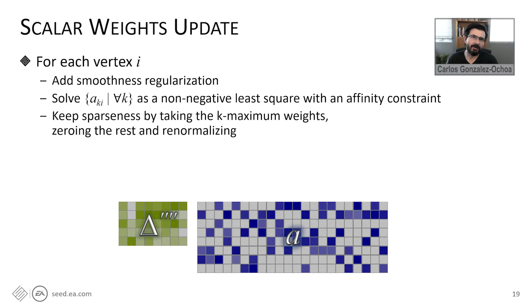Now we can see how the iterative part of the algorithm works. First, we are going to update the scalar weights. Remember, at this step, we keep the virtual joints fixed. We minimize per vertex an objective function that uses a smoothness regularization scheme with constraints. We solve this using non-negative least squares with an affinity constraint. But please refer to the paper for more details.